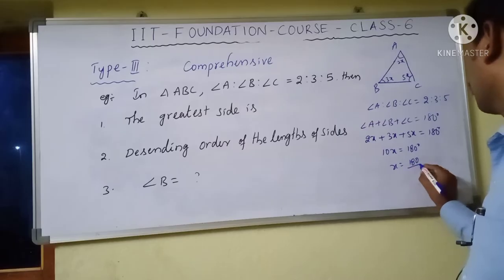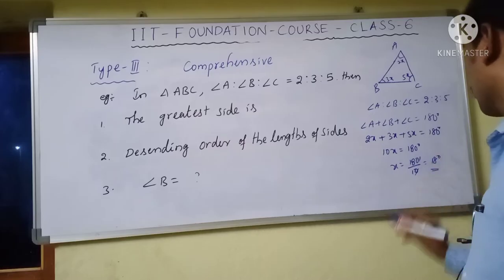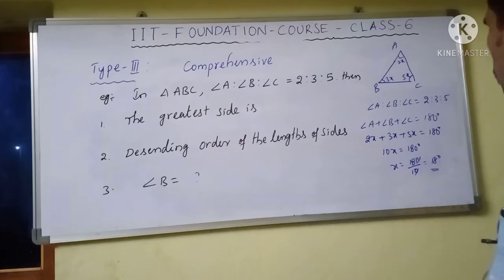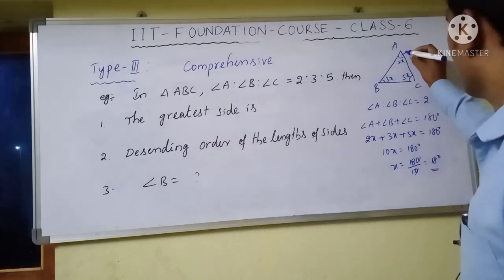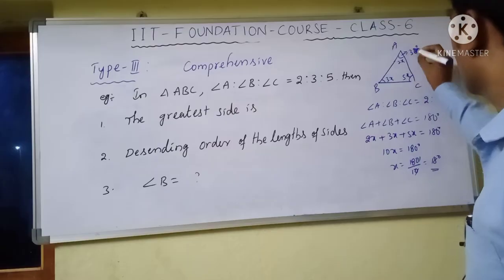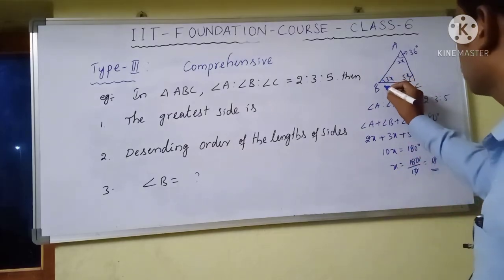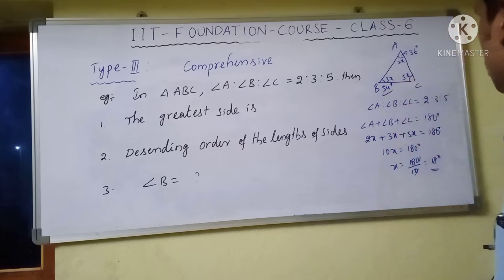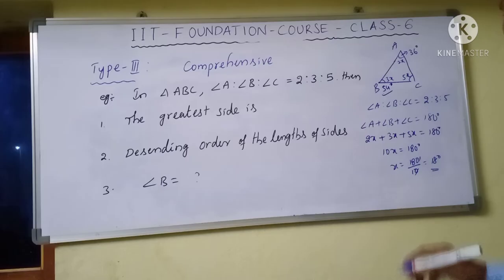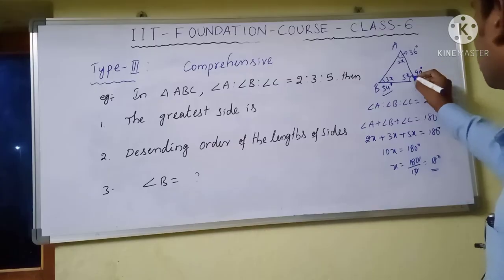So x = 18 degrees. Angle A = 2x = 2 × 18 = 36 degrees. Angle B = 3x = 3 × 18 = 54 degrees. And the remaining angle C = 5x = 5 × 18 = 90 degrees, which is a right angle.